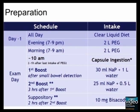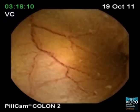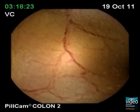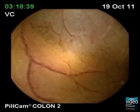Briefly, the preparation consists of a split regimen of polyethylene glycol solution — two liters the day before and two liters on the morning of the examination — and an additional low dose of sodium phosphate boosters. The cleansing level of the small bowel was adequate.